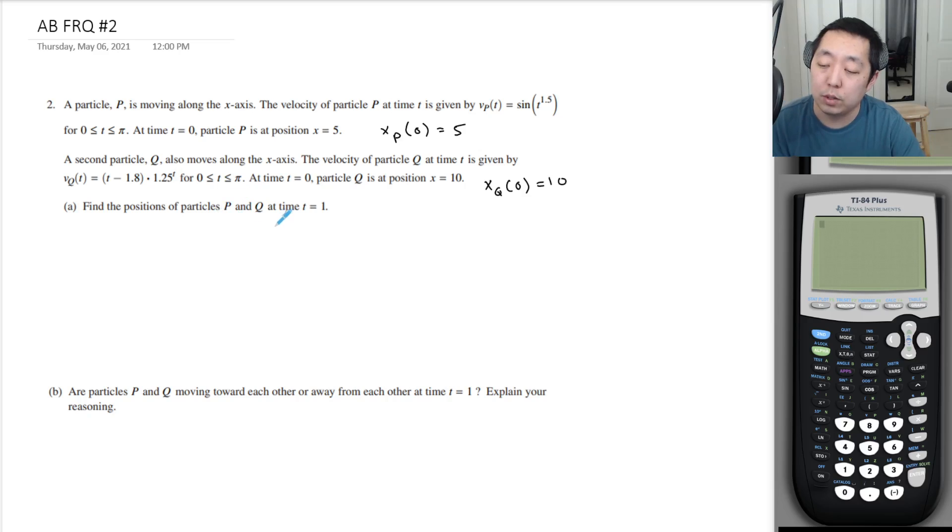Find the positions of particles P and Q at time equals 1. You could either just do the integral - we're going to do the integral directly. So how do we find positions? It's always the integral.